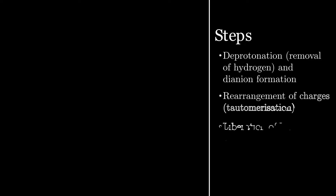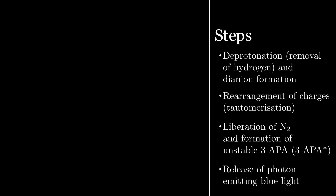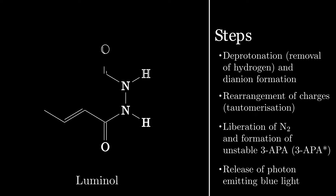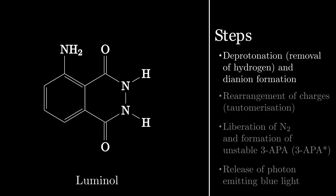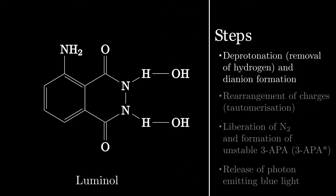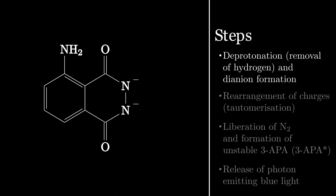With that said, the mechanism of the luminol reaction is, in essence, a four-step process. First, the compound is deprotonated, creating a doubly negative charged ion, also called a dianion.